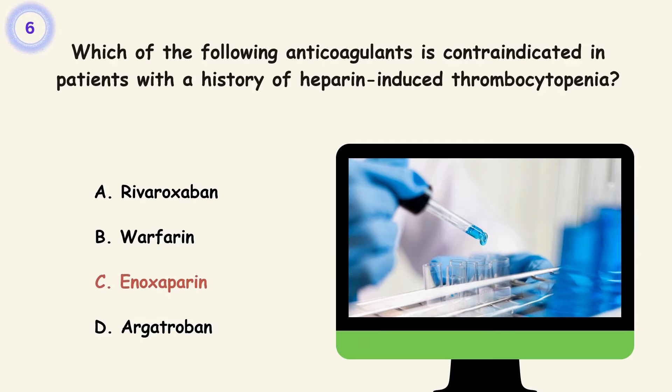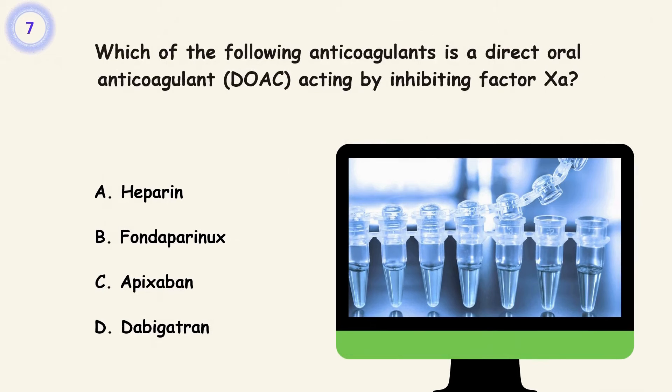Question 7. Which of the following anticoagulants is a direct oral anticoagulant, DOAC, acting by inhibiting factor Xa? A. Heparin. B. Fondaparinux. C. Apixaban. D. Dabigatran. Answer is C. Apixaban.